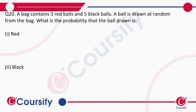A bag contains three red balls and five black balls. A ball is drawn at random from the bag. What is the probability the ball drawn is red? The total number of balls is three plus five, that is eight.